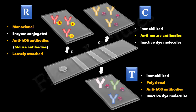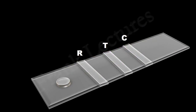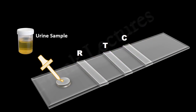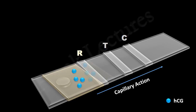Let's first understand the working of a positive pregnancy test. A urine sample is applied in the sample port of the pregnancy test strip. Here, we assume that the urine applied has been taken from a pregnant woman. Thus, HCG is present in this urine sample. The urine is drawn up the strip by capillary action and arrives at the reaction zone.